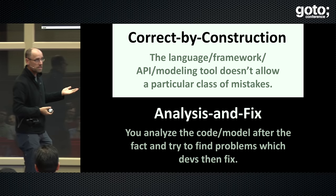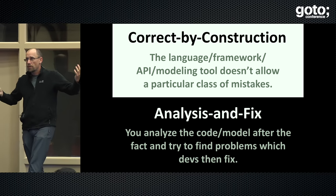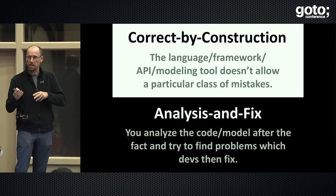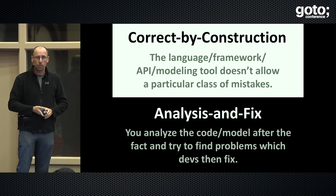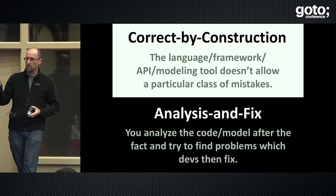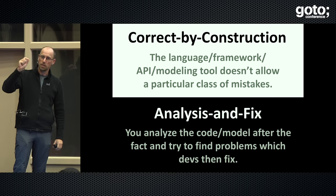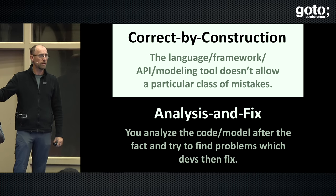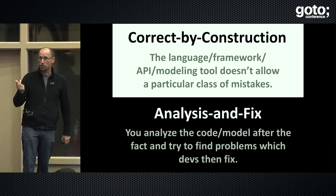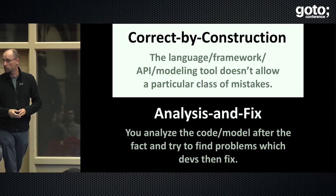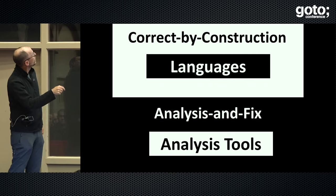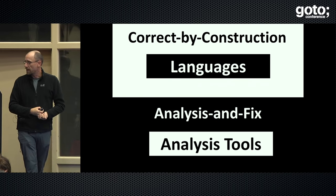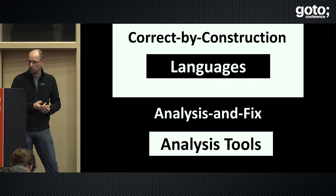Analysis and fix: you write a program and then analyze and show that this particular program doesn't have certain bugs. You can run a checker over your Java program — which does have null values — but it still does an analysis that shows in this particular program it's guaranteed that for all possible executions, null pointer exceptions won't happen. Whether this is easy, expensive, or possible at all depends on the language. For correct by construction you need a suitable language; for analysis and fix you need a suitable tool — and you can of course combine both.